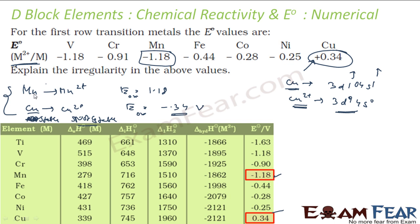Same thing for manganese to Mn²⁺. For Mn, the electronic configuration is 3d⁵ 4s², and Mn²⁺ is 3d⁵ 4s⁰. This is more stable. So the reaction moves in the forward direction more easily, and the E oxidation is a high positive value. It's breaking the trend because at these two positions we have two different scenarios.